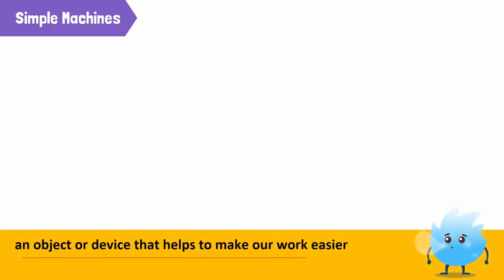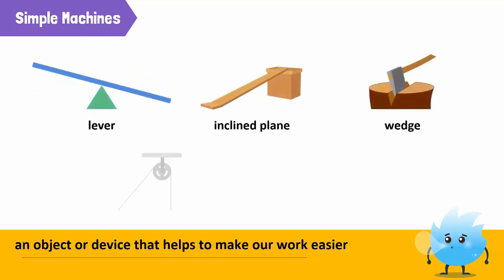A simple machine is any object or device that helps to make our work easier. A lever, an inclined plane, a wedge, a pulley and a wheel are all examples of simple machines.